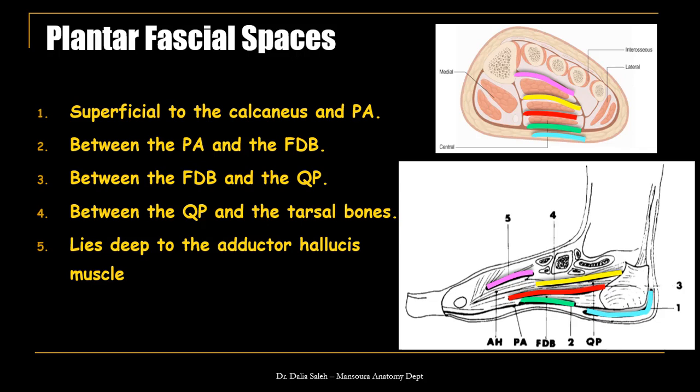Regarding how the plantar fascial spaces communicate: the first space, superficial to the calcaneus and plantar aponeurosis, is closed and does not communicate with the others, so infection there is confined. Spaces two through five communicate with each other, so infection can spread between them. The most important is the third space — with minimal pressure its anterior septum can break down, spreading infection along the slips of the plantar aponeurosis to the toes. Also, because the main blood vessels and nerves run in this space, infection can spread along the neurovascular bundle, below the flexor retinaculum, upward to the potential space between the superficial and deep compartments of the posterior leg.